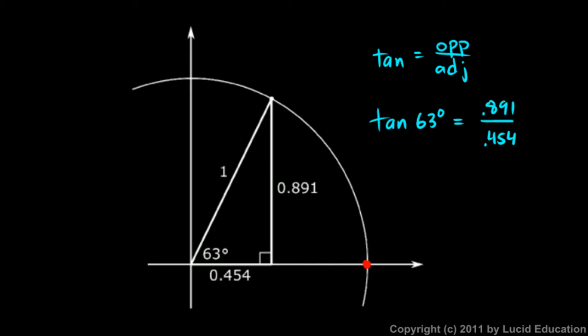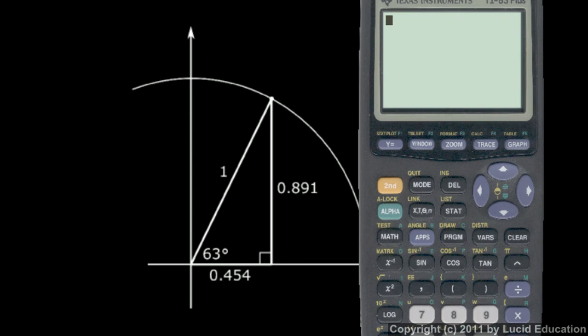And if we take out the calculator and do that, we get 1.963. And then what we can see is if we actually pull out a calculator and calculate the tangent of 63 degrees on the calculator, it should say 1.963. So pull up the calculator and say tangent of 63, and there it is, 1.96, we round that to 1.963.